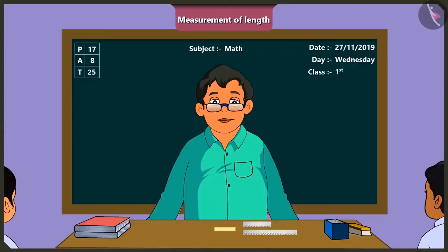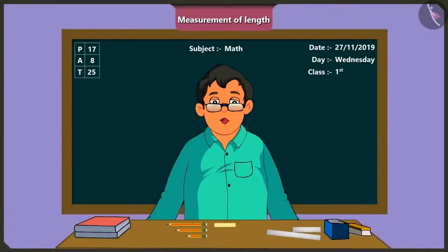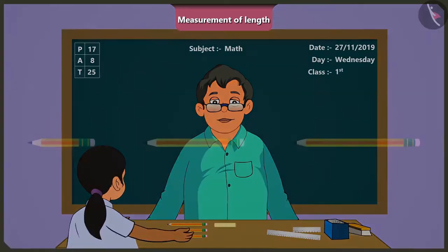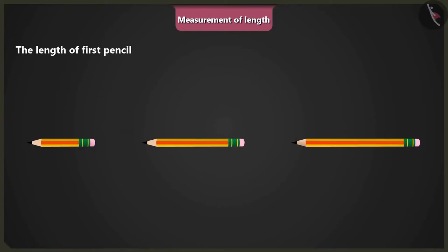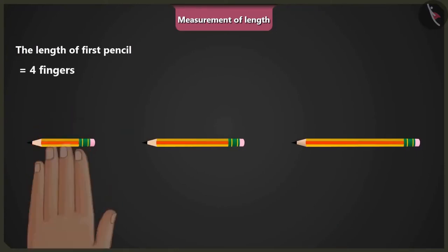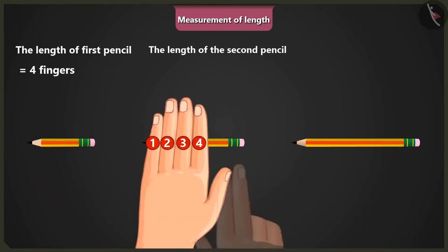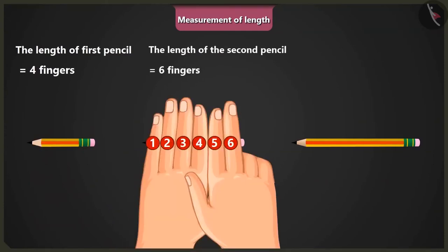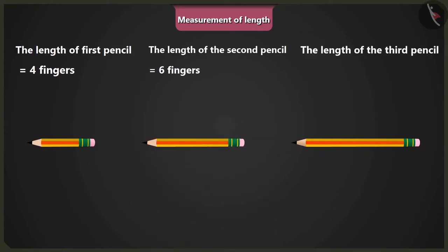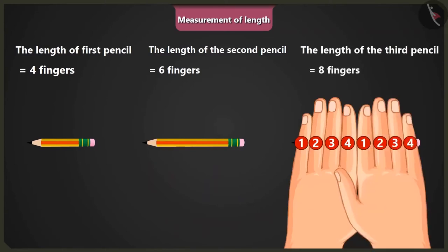Yes sir! Here they are. Mintu, come here. Measure these three pencils with your fingers. The first pencil is equal to the length of my four fingers. The second is 4 plus 2, that is 6 fingers long. And the third pencil is equal to 4 plus 4, 8 fingers long.